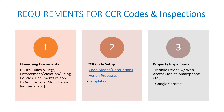The requirements for CC&R codes and inspections: first, you're going to need your governing documents — whatever rules and regs speak to what homeowners can and can't do. Within each CC&R code you'll have a code alias and description. Also the action processes — where step one is the first letter, step two is a second letter maybe by certified mail, and step three might include a fine. That's the action process setup. Then the templates you're going to tie to those action processes at each step.